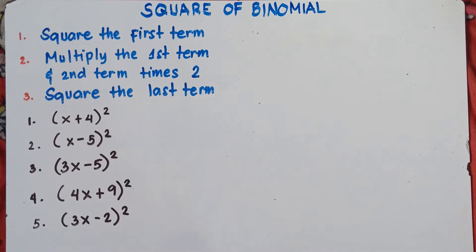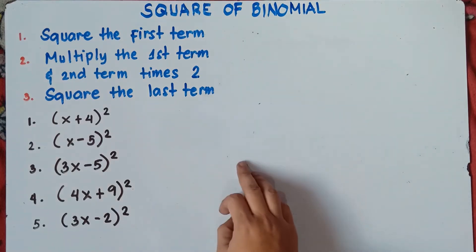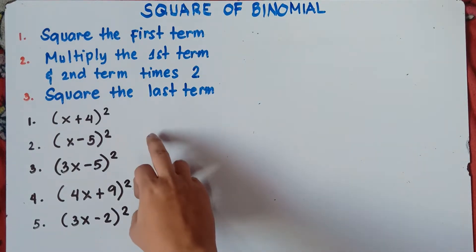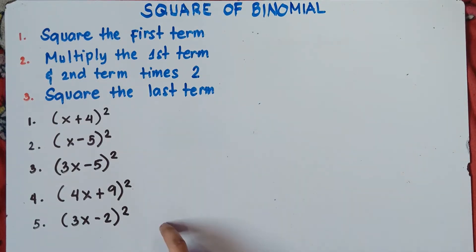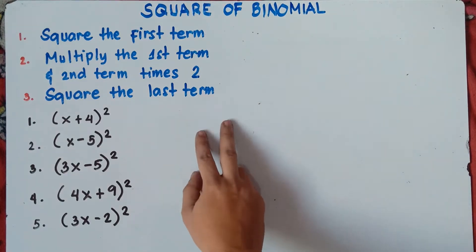We have three procedures for the square binomial. First, you square the first term. Second, multiply the first term and second term times 2. Then third, square the last term. If you remember this procedure, you can simply answer numbers 1 to 5 easily by just following this procedure.